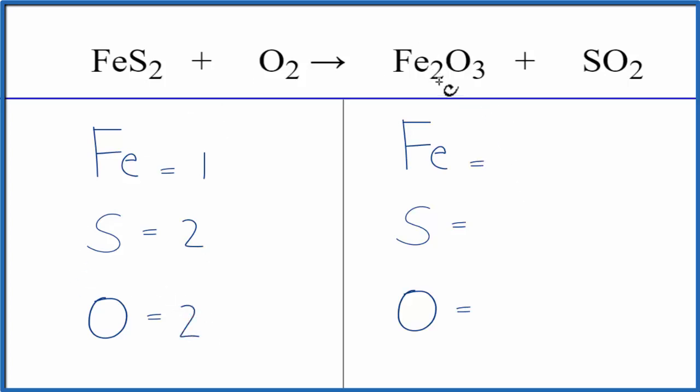On the product side, we have two irons, one sulfur, three oxygens, plus we have these two oxygens. So we have five total oxygens on the product side of the equation.